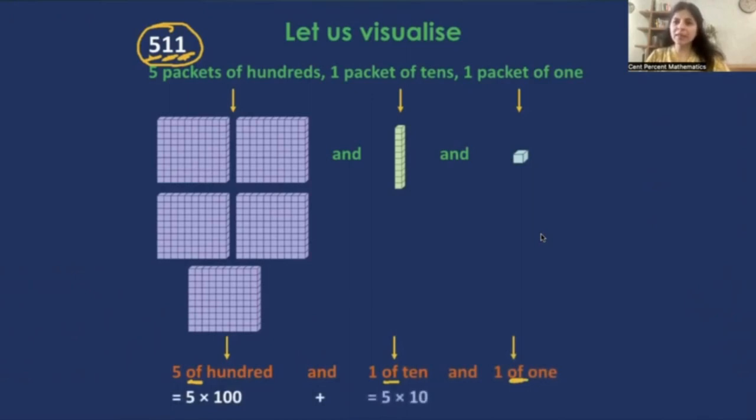Mathematically, we always represent 'of' by multiplication, which will be more clear to you as we go through these sessions. And 'and' is represented by a plus. So that means there are 5 packets of 100, 5 times 100, 1 of 10, that means 1 times 10, and 1 of 1, which is 1 times 1. So this is how you need to visualize.